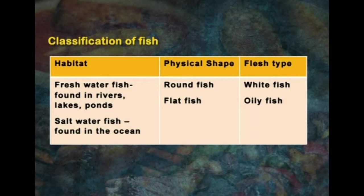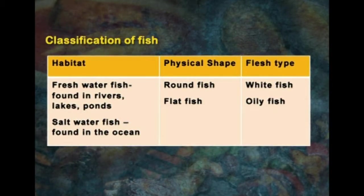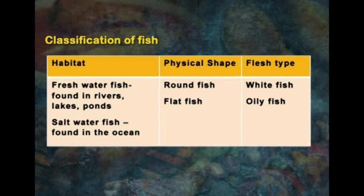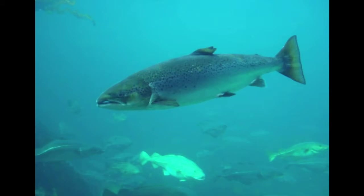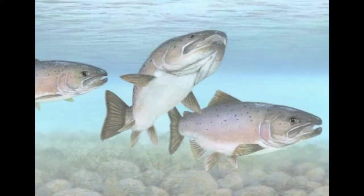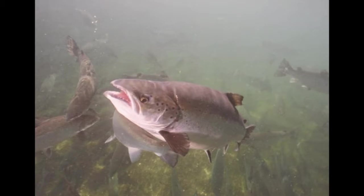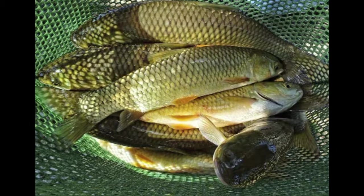Fish are also classified by physical shape — whether round fish or flat fish — and depending upon fat content or flesh type, we have white fish or oily fish. Freshwater fish live mostly in freshwater with a salinity of less than 0.5 percent, and nearly 41 percent of fish species are found in freshwater. Examples include salmon, tilapia and carp.